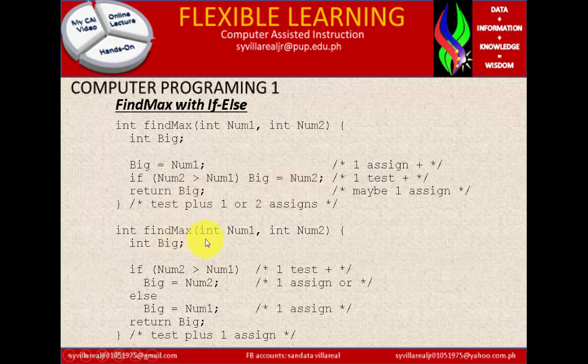Next we have integer find max int num1 and num2, integer big the same. But if num2 is greater than num1, then big is equal to num2. Else, if it is false, it will go to big is equal to num1. Now, which is best upon this to if-else statement? I go for the second part because this is complete.